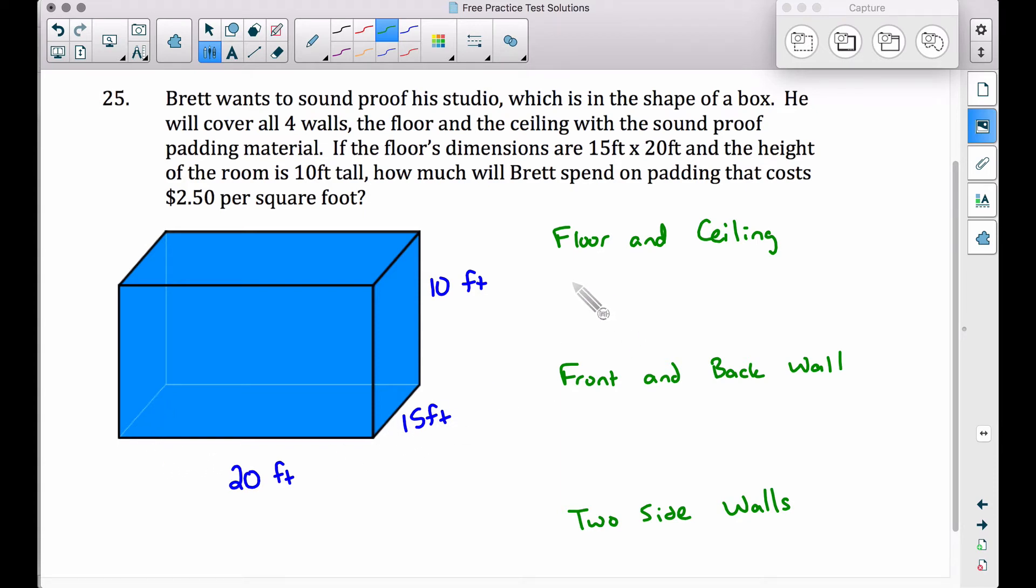Well, the area of the floor, since it's 20 by 15, we can take 20 times 15, and that's 20 feet times 15 feet. That's going to be equal to 300 square feet, but that's just the area of the floor. Since we have a ceiling, let's double that. 300 square feet here and 300 square feet here give us an area of 600 square feet for our floor and ceiling.